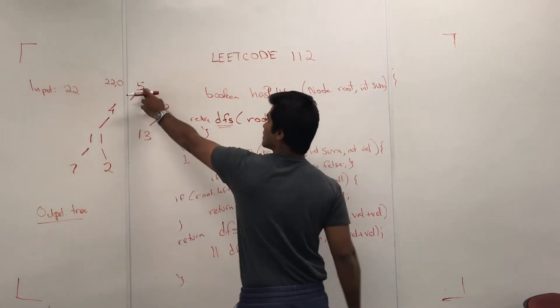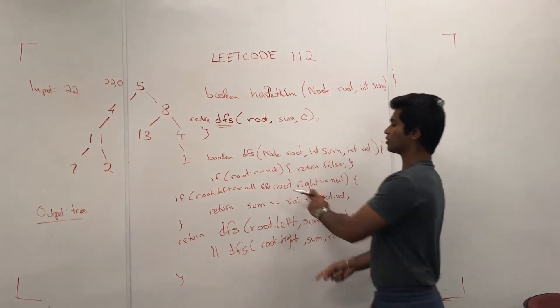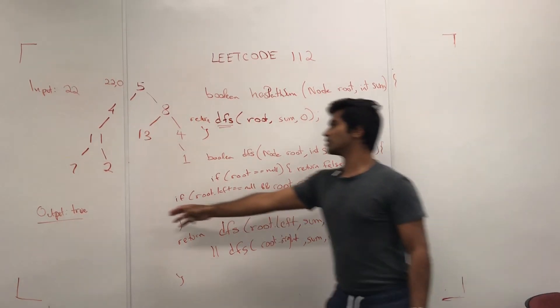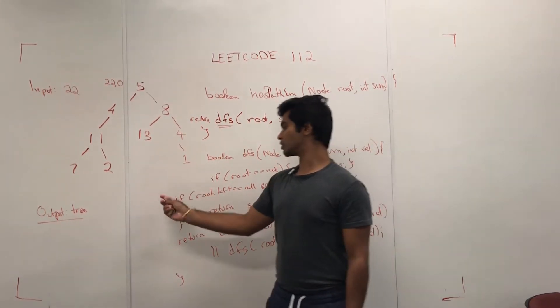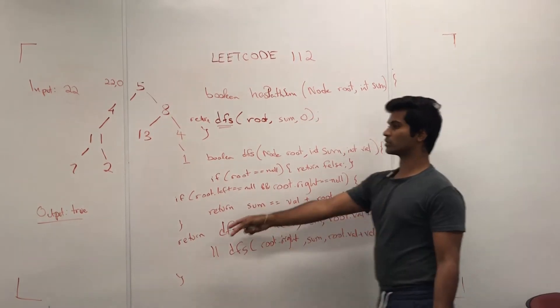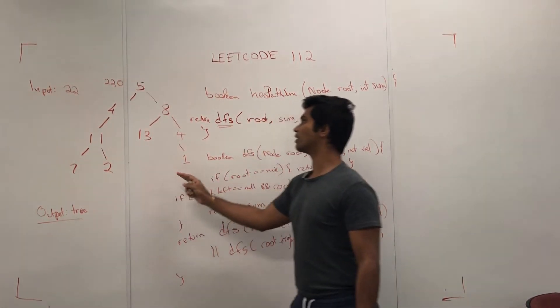So 5 is not null, and its left and right children are not null, meaning it's not a leaf. The only leaves, the only nodes which check for this left and right null condition are the leaves, which are 7, 2, 13, 1.